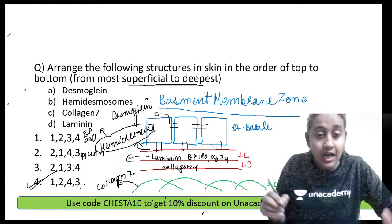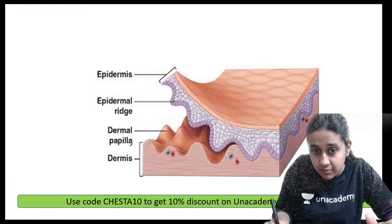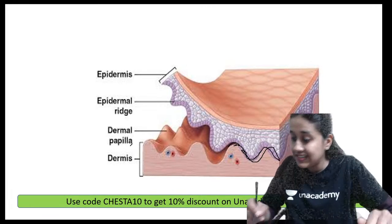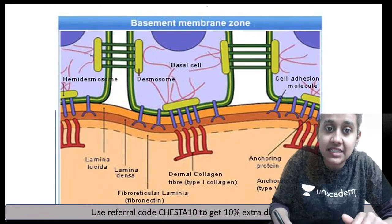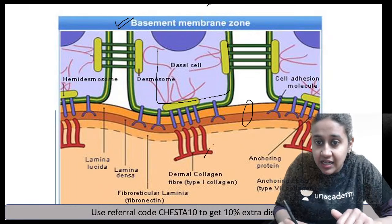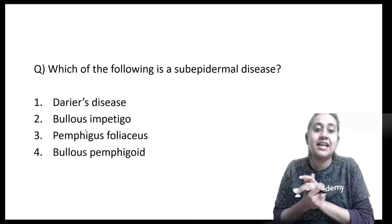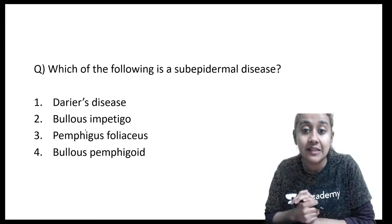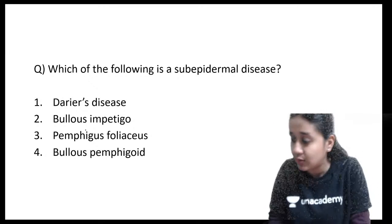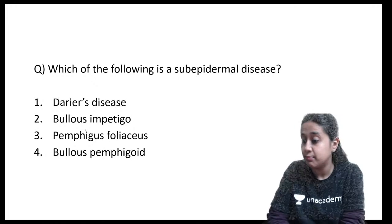The pictorial representation shows: stratum basale cells at the top, then the basement membrane, and Collagen 7 fibers in the lamina densa below. Next question: Which of the following is a sub-epidermal disease? Options are Darier's disease, bullous impetigo, pemphigus foliaceous, or bullous pemphigoid.